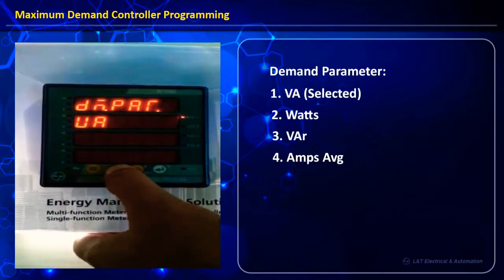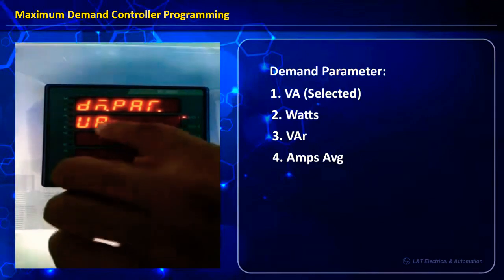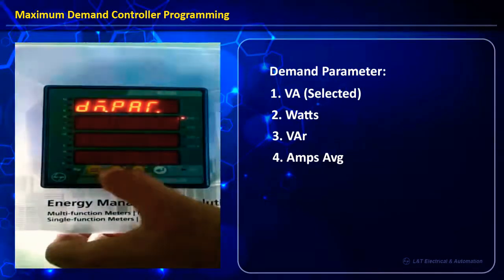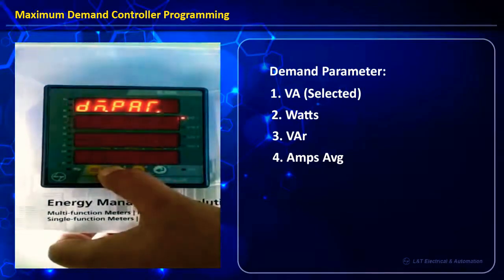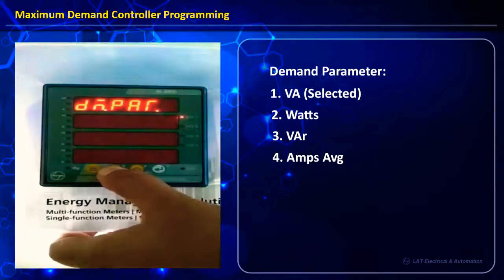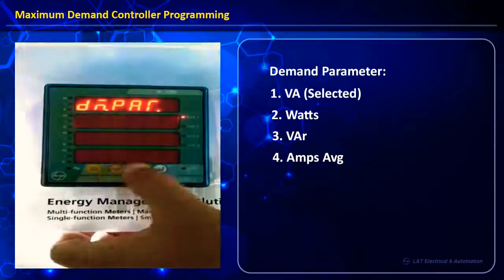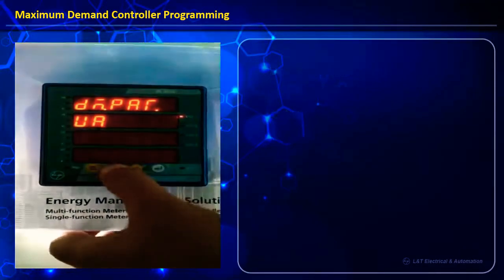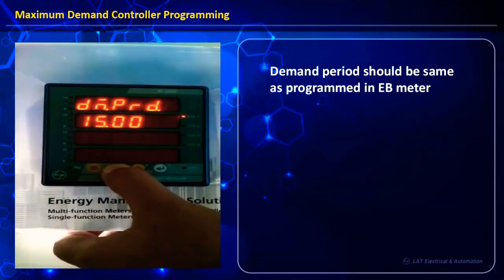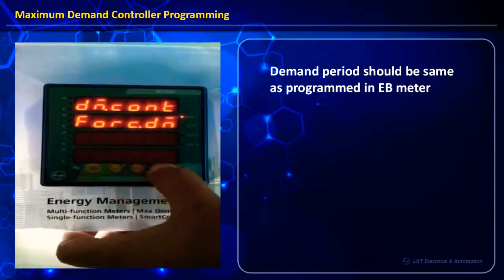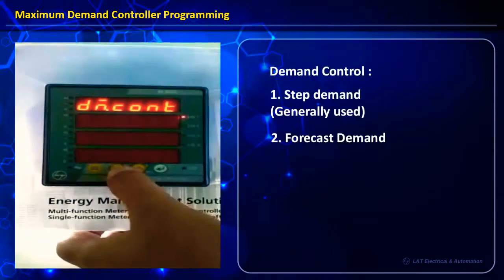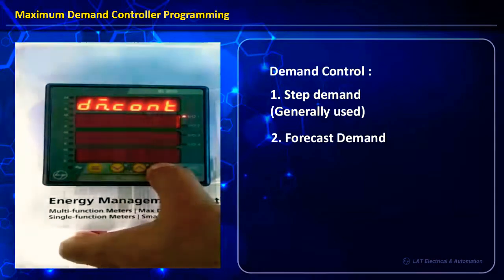Demand parameter can be selected from any of four options; for our programming we will select VA. Demand period can be 15 or 30 minutes. Demand control we will set as step demand.